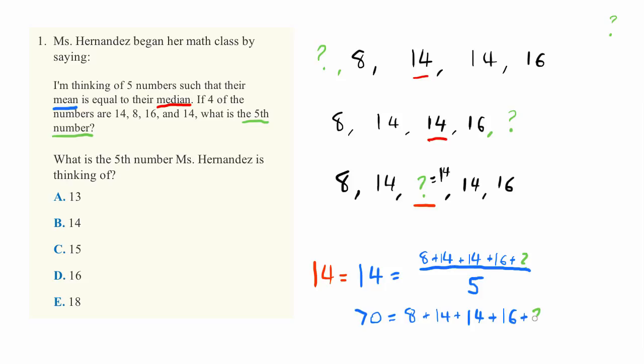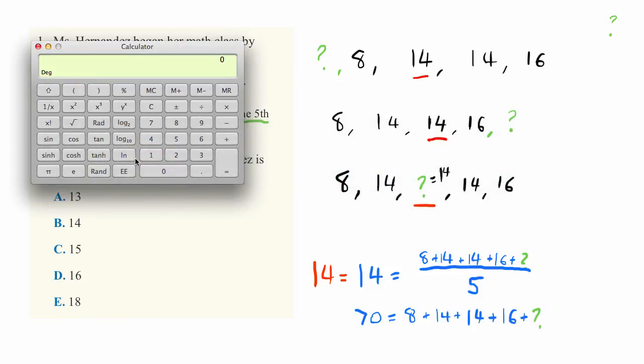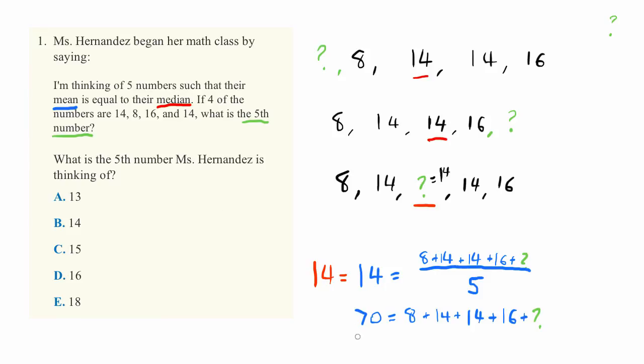And if we go ahead and subtract each of these, now I'll just go ahead and use a calculator for this. So we have 70 minus 8 minus 14 minus 14 minus 16 is equal to the correct answer. Our unknown value is equal to 18.